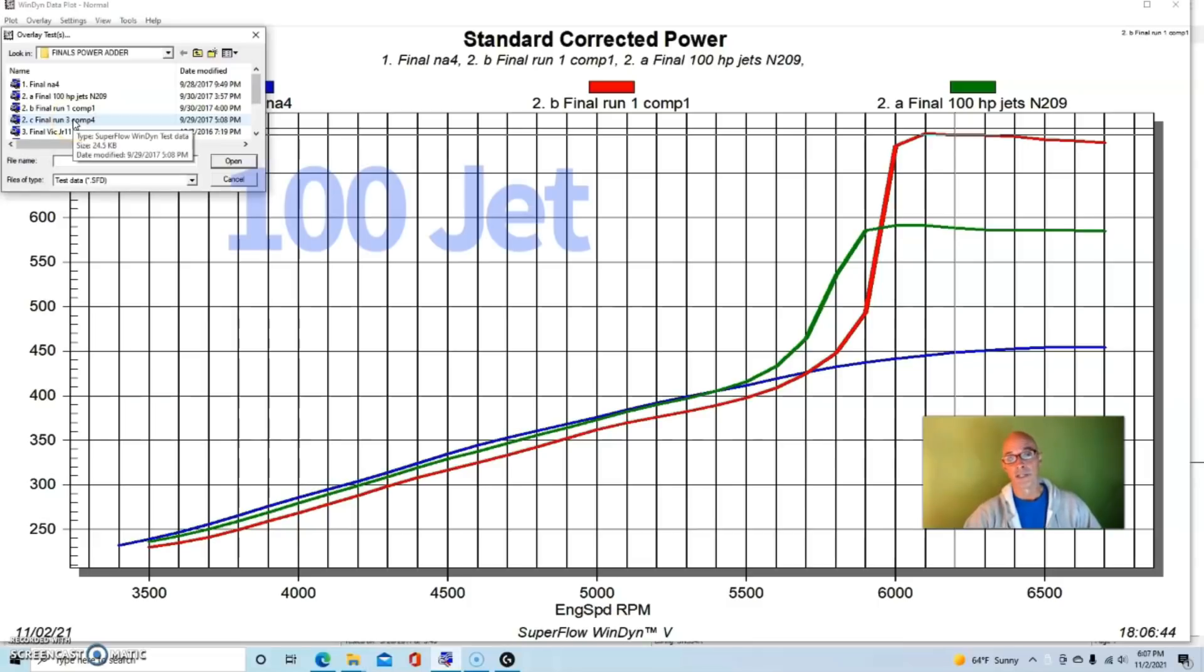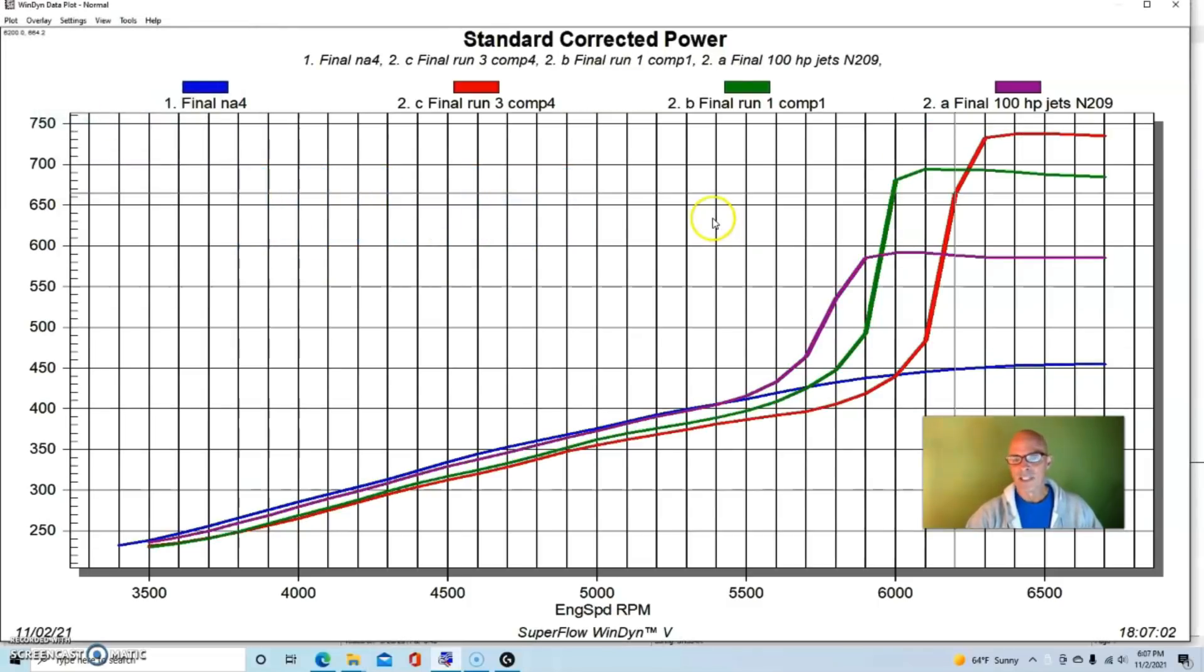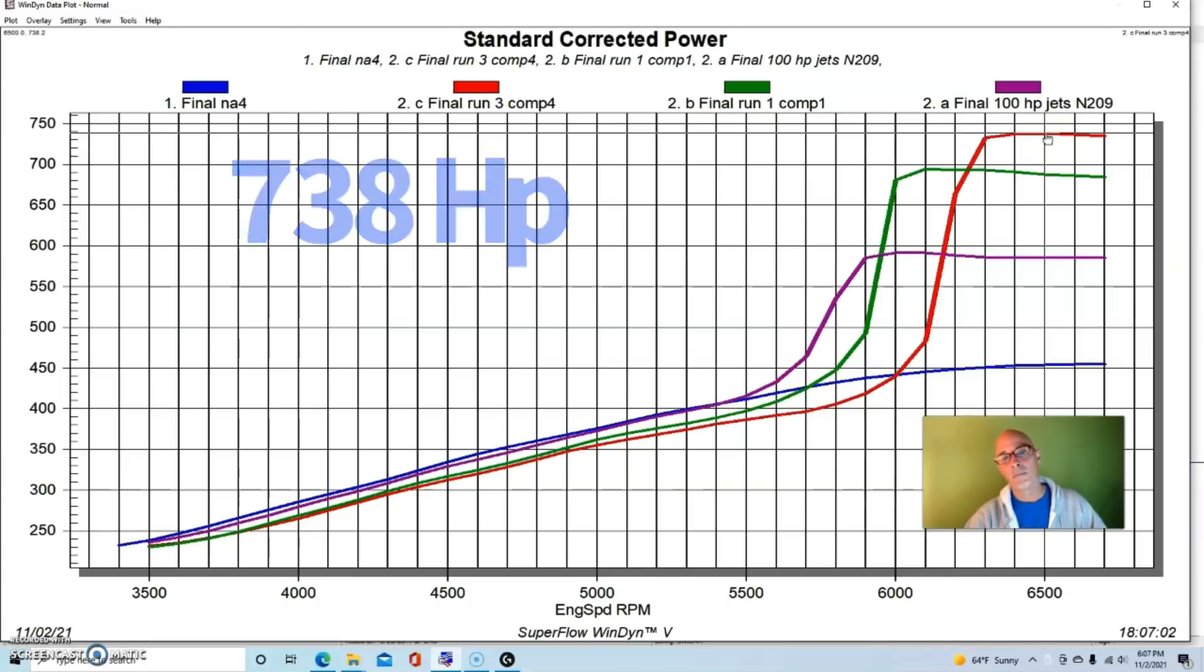Here's what happened when we put our final jetting in there because it just wouldn't make any more power. We put a 100 nitrous jet in it, and obviously we're going up in successive fuel jets as well to match the air fuel curve. Actually the air fuel curve was consistent NA and with the nitrous, so we kept this thing in the 12s with our nitrous because we were getting pretty spicy on our nitrous tune. This made 738 horsepower.